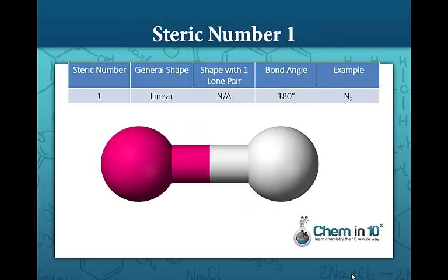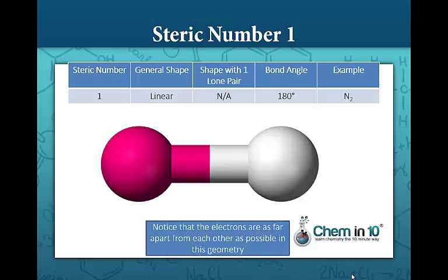An atom or central atom that has a steric number of one means it's only attached to one thing, either a lone pair or a bond, and that will have a linear shape, a bond angle of 180 degrees, for example nitrogen gas, N2. Notice that the electrons are as far apart from each other as possible in this geometry. All the geometries work out so that the electron pairs are as far away from each other as possible.